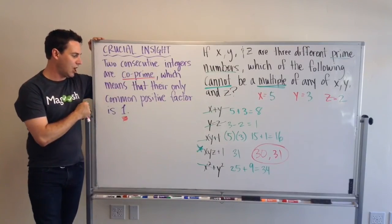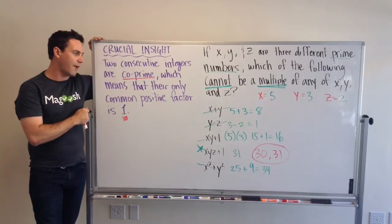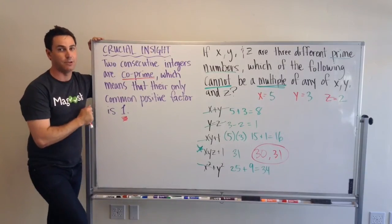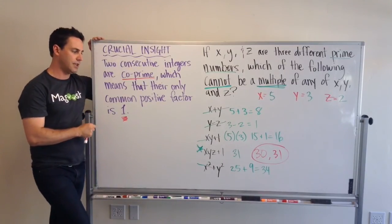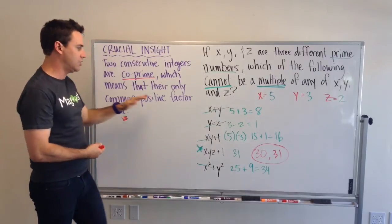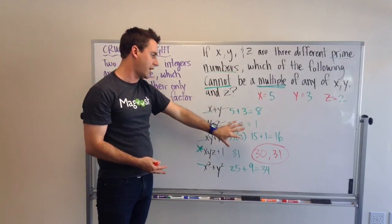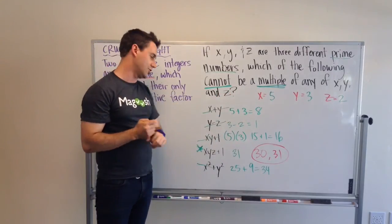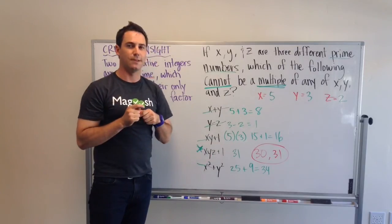co-prime means that there are only, there's only one common factor, one positive common factor, between two consecutive numbers. And, if you knew this, going into this question, you wouldn't have to fuss around with plugging in all these numbers. You could just go directly to d and choose it.